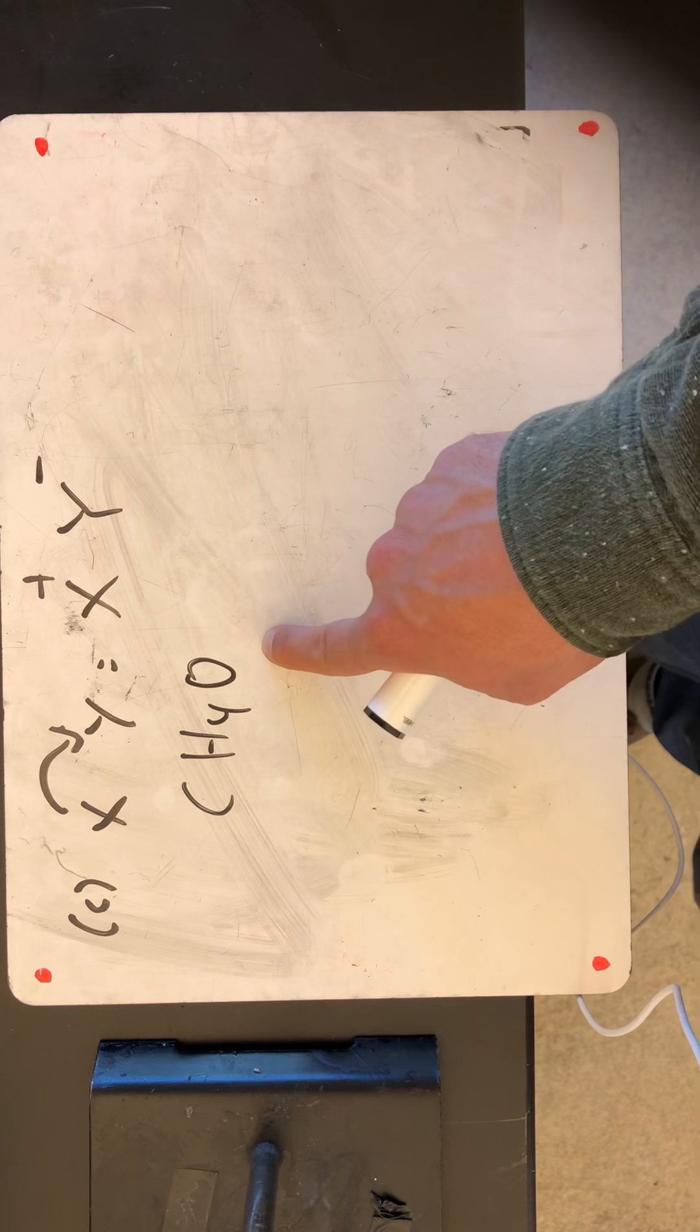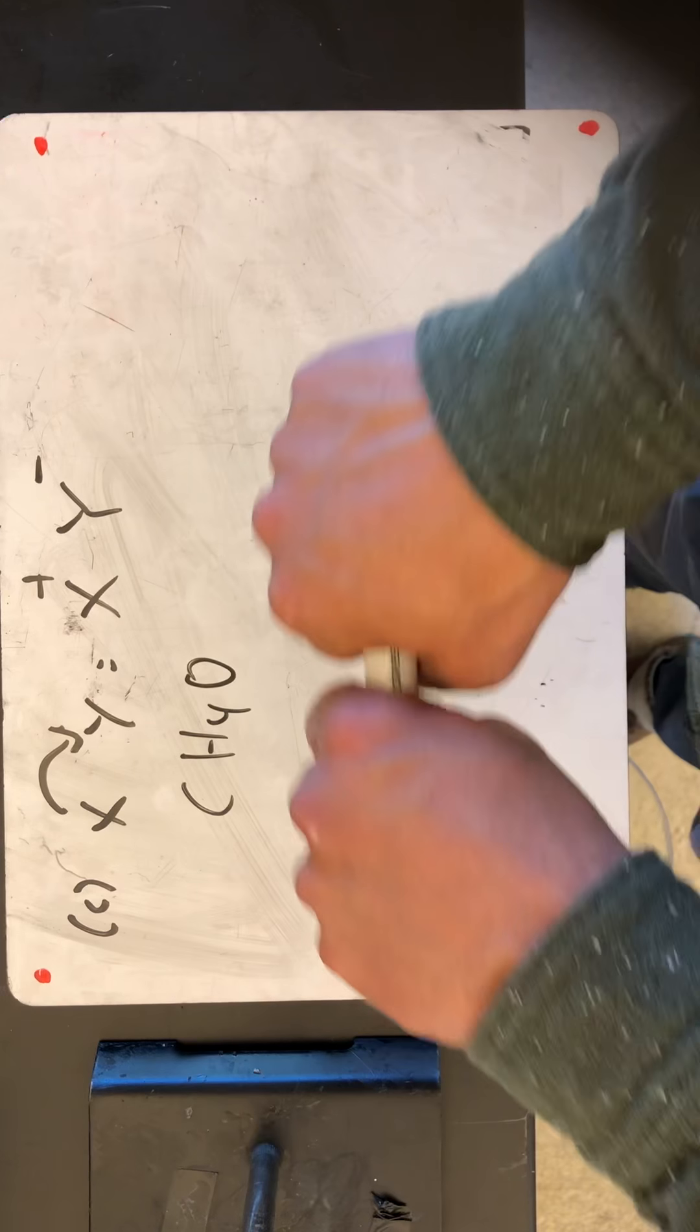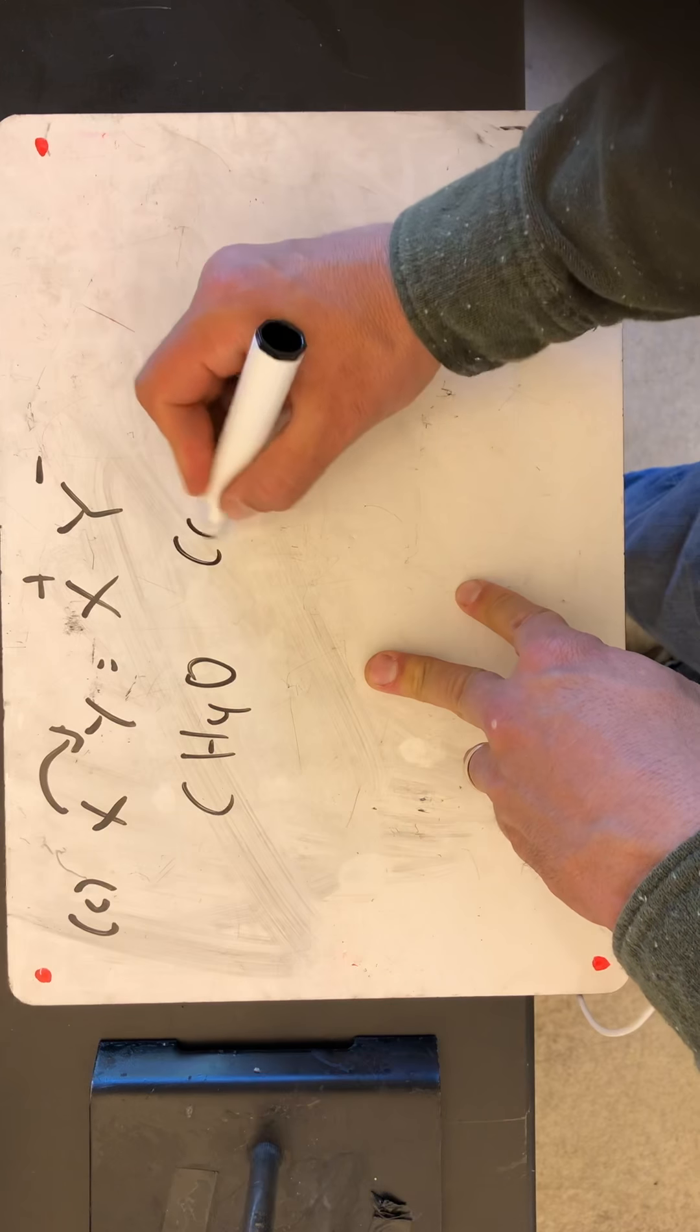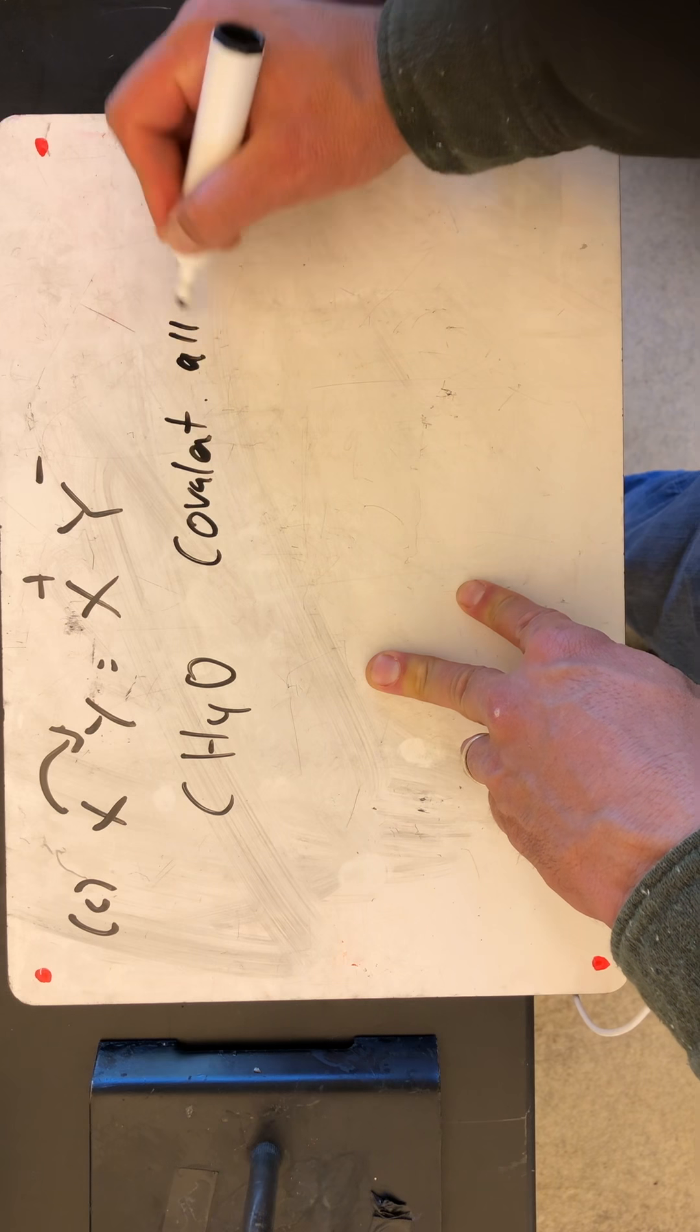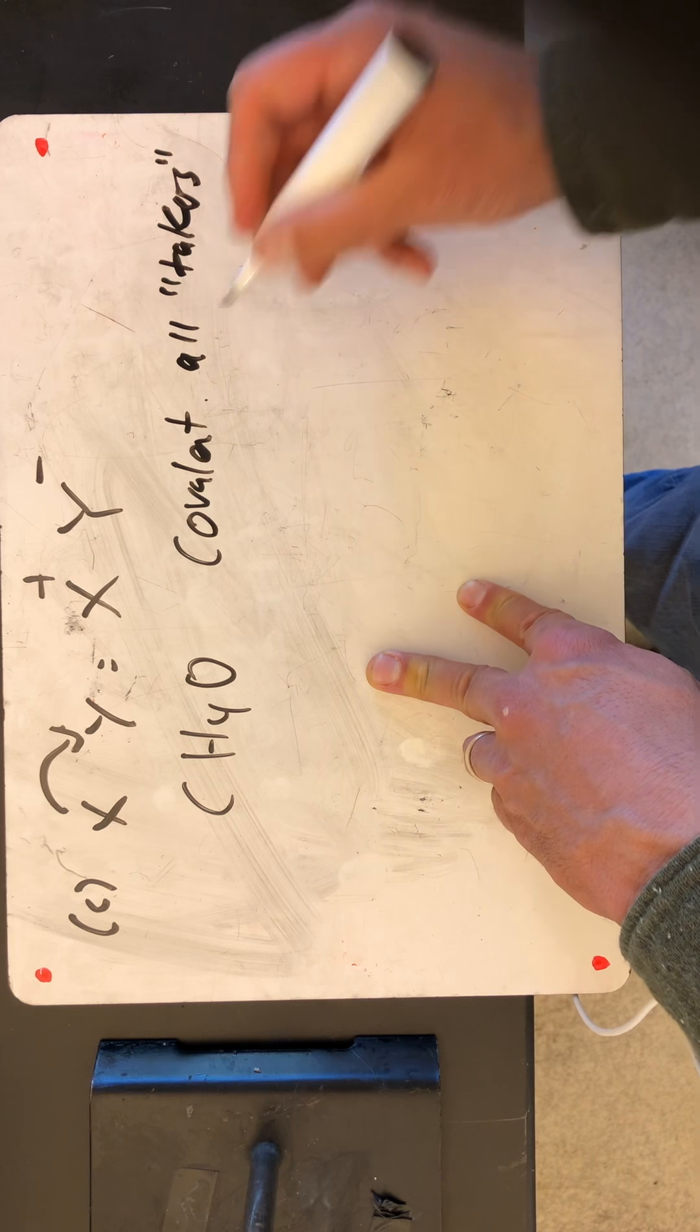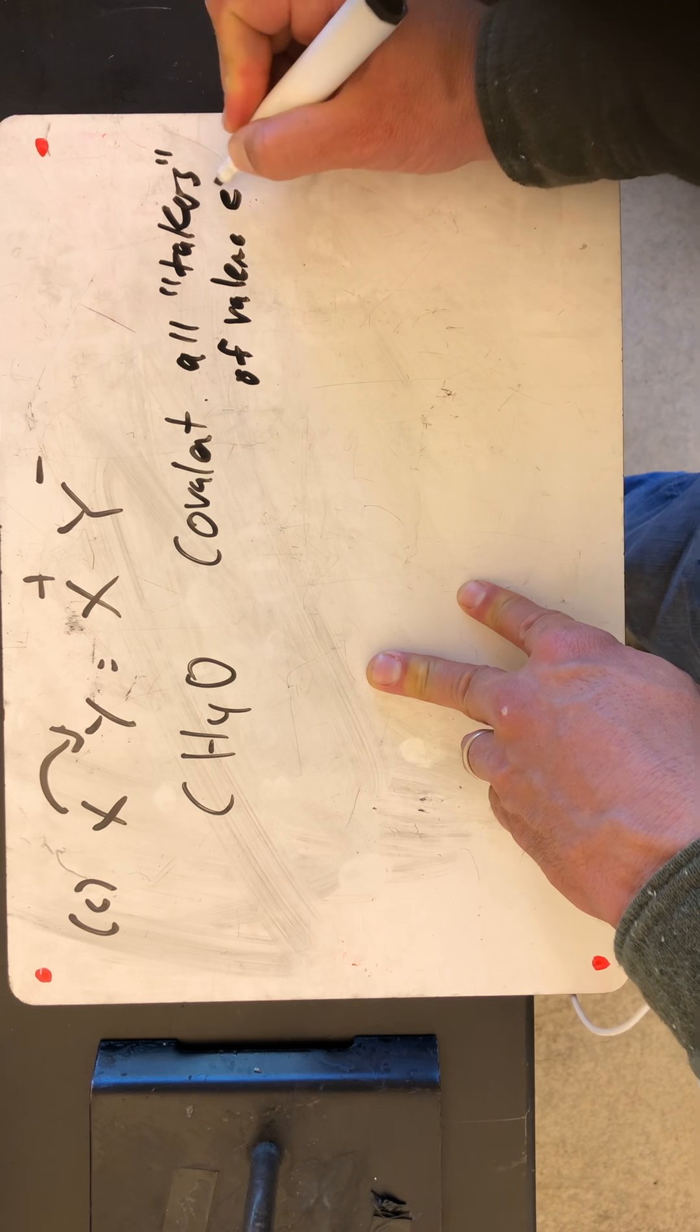It wants to be like helium. And oxygen is a taker. So they're gonna play tug of war on those electrons the whole time. And in doing so, they're gonna form a covalent bond.